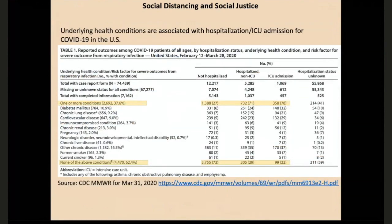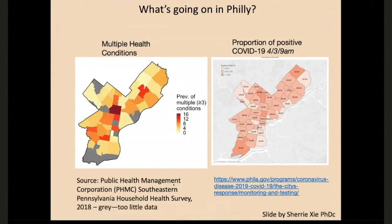We also have heterogeneities in underlying health conditions, and this effect is very large. The percent of hospitalized individuals versus non-hospitalized individuals with health conditions is almost flipped from those who have no health conditions — it's a very strong effect. And when you go back to the map of our city, those health conditions are also associated with poorer neighborhoods and zip codes.